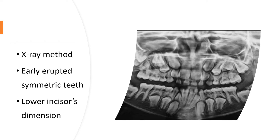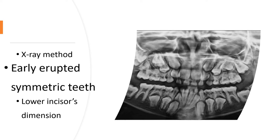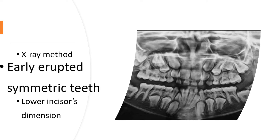Sometimes, the early extraction of deciduous teeth may accelerate the eruption of permanent teeth. In cases where the arch is not developing symmetrically, you may use the mesiodistal width of the symmetric tooth already present in the arch.